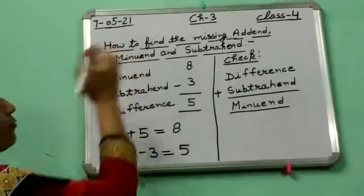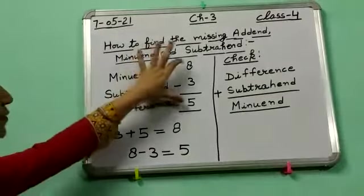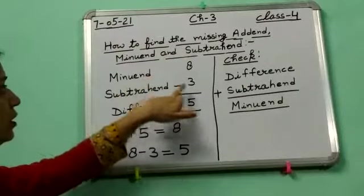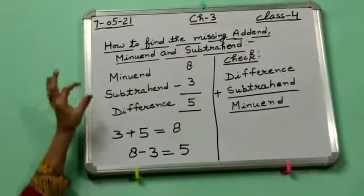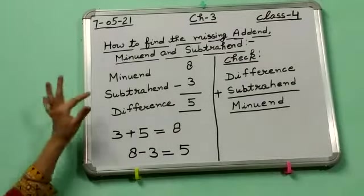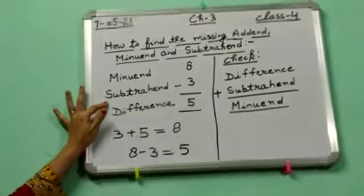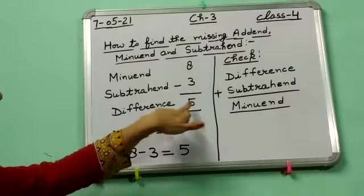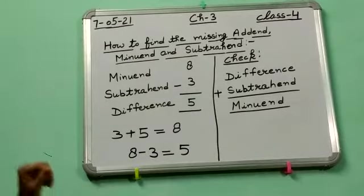Second concept — how you have to find the minuend? I have already explained to you. If this subtraction sum is given to you — so this is minuend, this is subtrahend, and this is difference. Suppose minuend is given to you and difference is also given to you, you have to find the subtrahend. So how will you find? You will subtract the difference from the minuend. Means 5 from 8 — 3 comes.